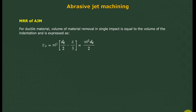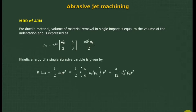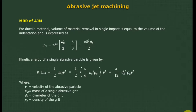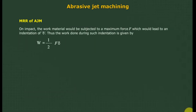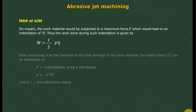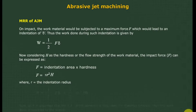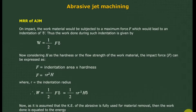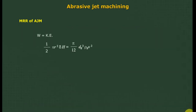For ductile material, the volume of material removal in a single impact equals the volume of the indentation. The kinetic energy of a single abrasive particle is given by the mass and velocity of the abrasive grit, where V is velocity, Mg is mass of a single abrasive grit, Dg is diameter of the grit, and Pg is density of the grit. On impact, the work material is subjected to a maximum force F, leading to an indentation delta. Considering H as the hardness or flow strength of the work material, the impact force and work done can be expressed, equating kinetic energy to the energy used for material removal.